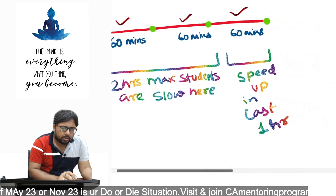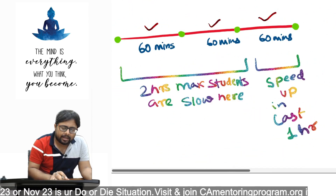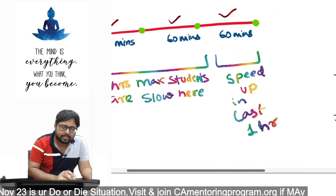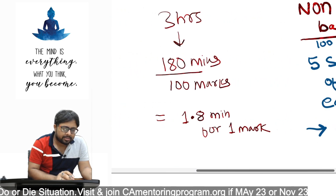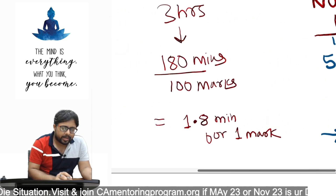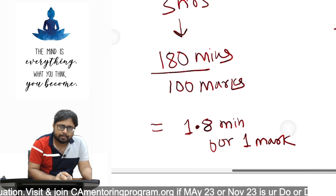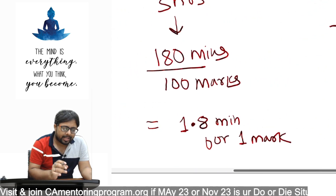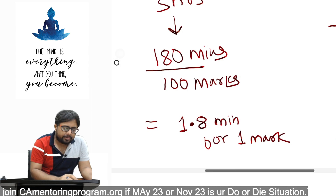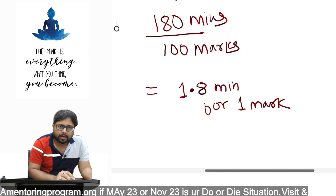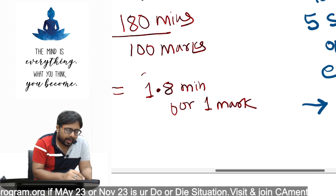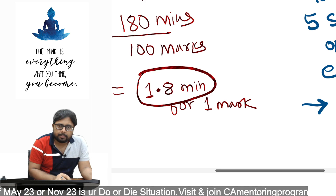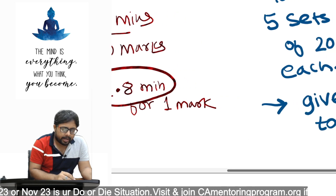You have to maintain a very good speed. You get three hours — 180 minutes in totality. If you divide by 100 marks, you get 1.8 minutes per mark.